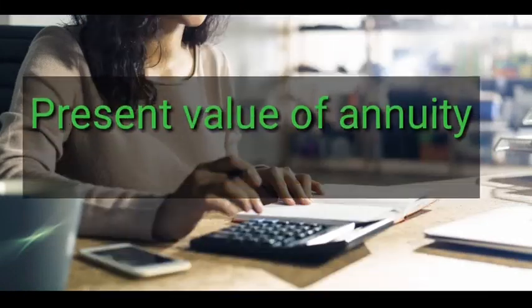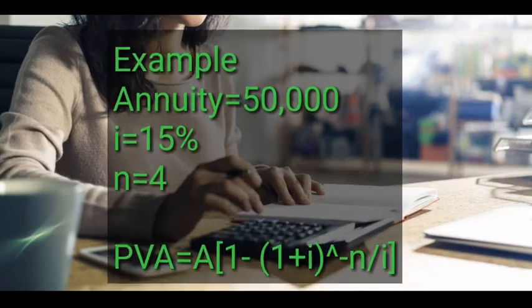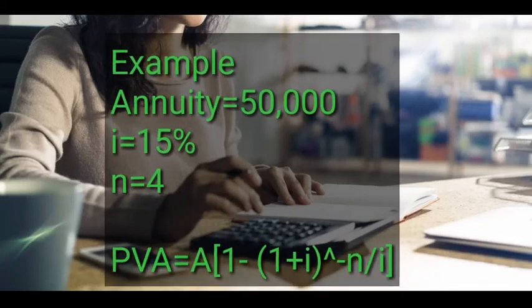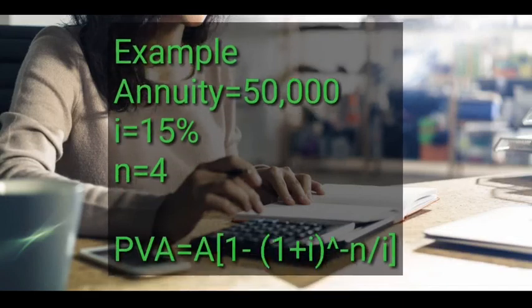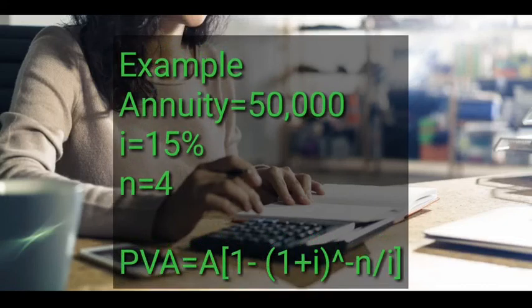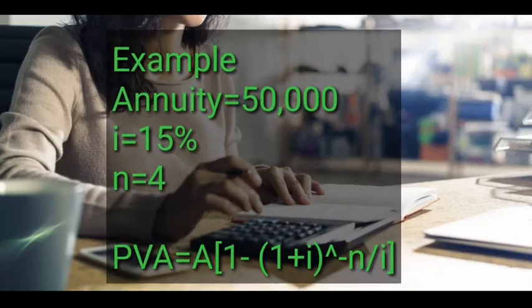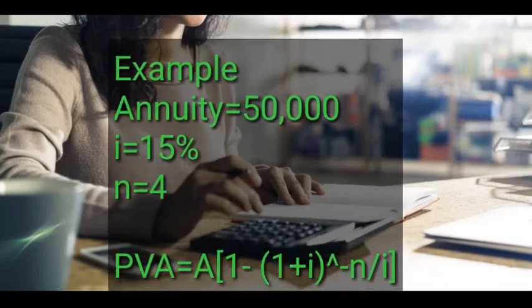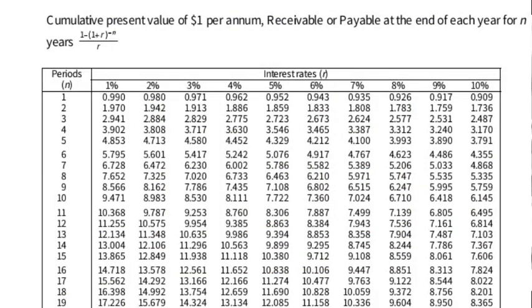Now let's look at how to calculate the present value of an annuity using the present value tables. For example, a business is supposed to pay 50,000 every year for 4 years as rent at an interest rate of 15% per annum. The formula for annuity is: A times [(1 minus (1 + i) to the power of negative n) divided by i]. That whole expression in brackets is the present value interest factor. We shall use a different table — not the same one used for the lump sum. This table is called the cumulative present value table and it has the present value interest factor of annuity.